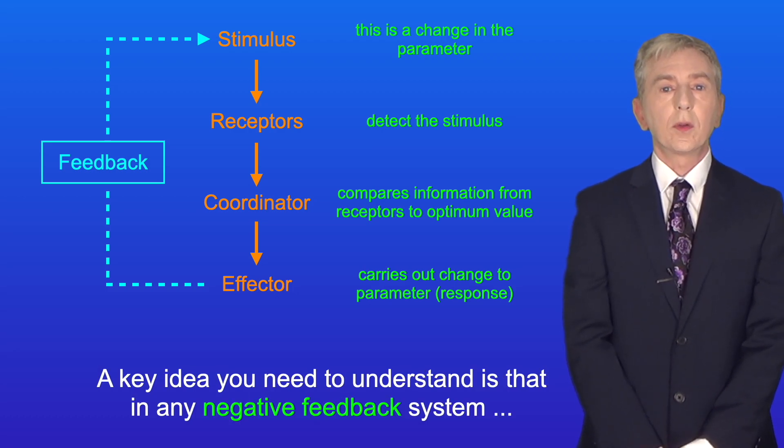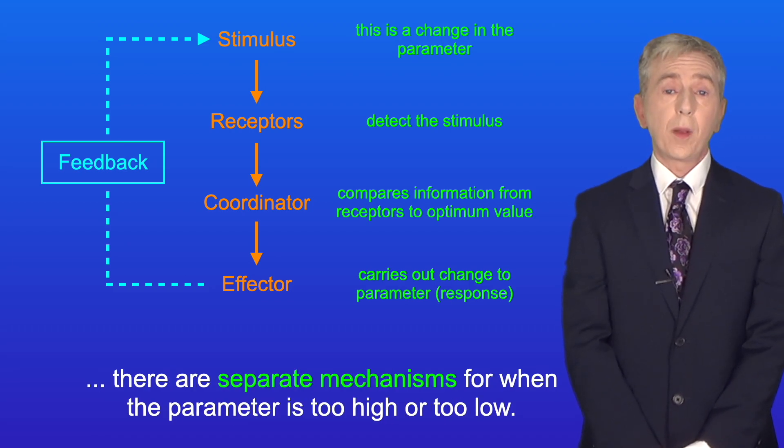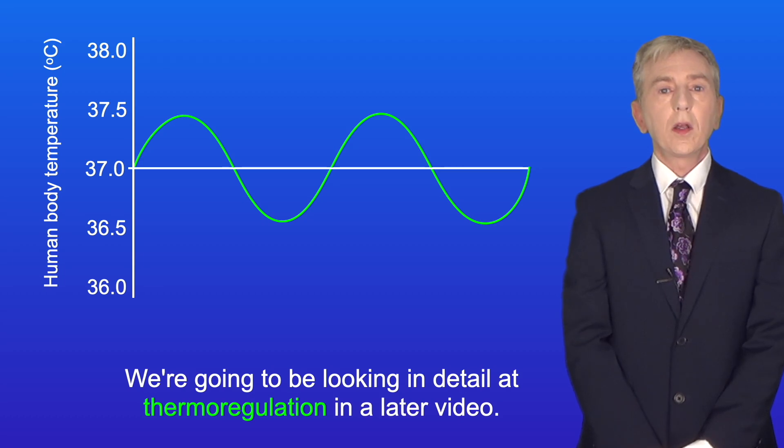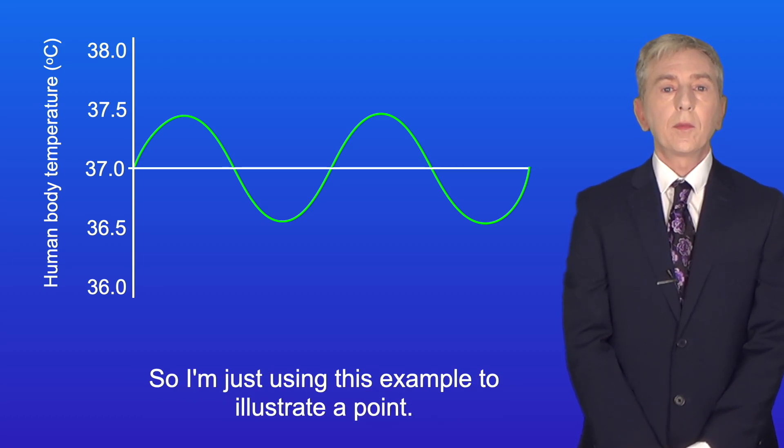Now a key idea you need to understand is that in any negative feedback system, there are separate mechanisms for when the parameter is too high or too low. I'm showing you here human body temperature again. We're going to be looking in detail at thermoregulation in a later video, so I'm just using this example to illustrate a point.